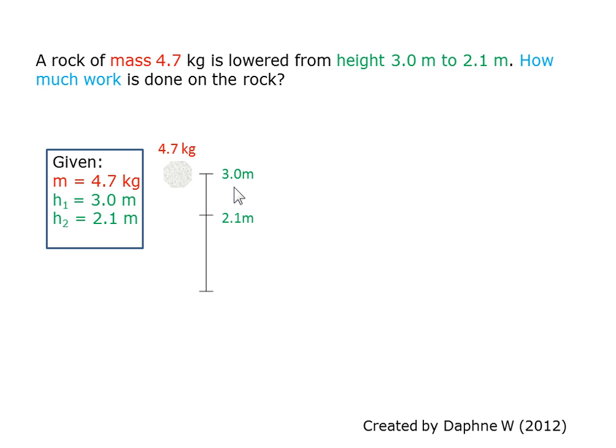Here's a diagram of the rock falling from a height of 3 m to a height of 2.1 m.